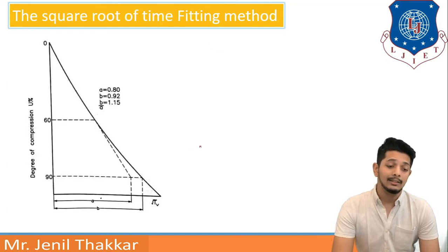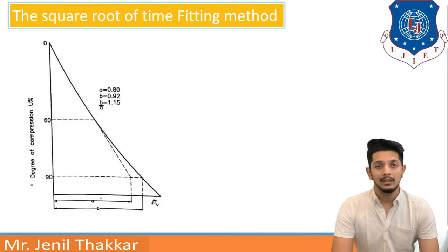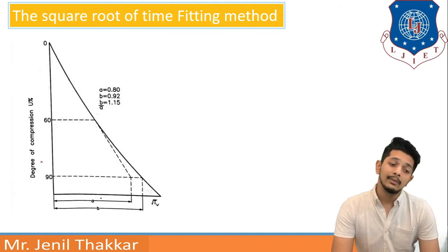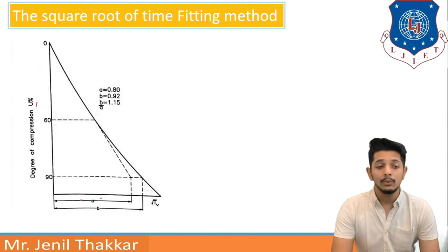In this method let us understand this theoretical curve first and then we will go to laboratory curve. Here it is given the curve is between degree of compression u and under root tv. Here you can see the graph is staying linear upto 60 percentage. After that upto 90 percentage it is changing its shape.